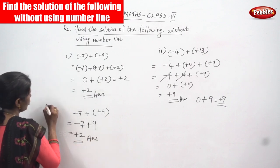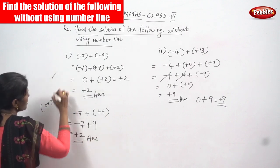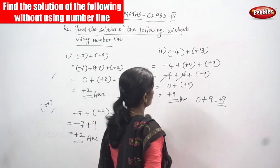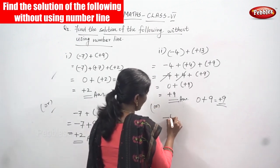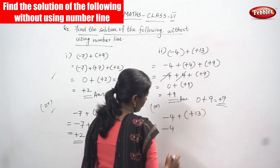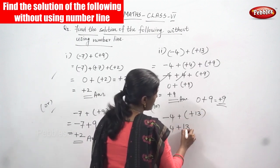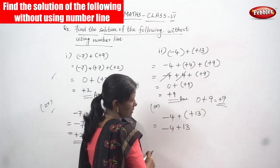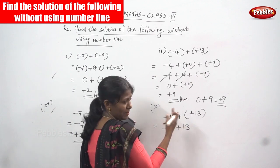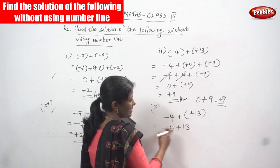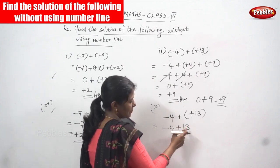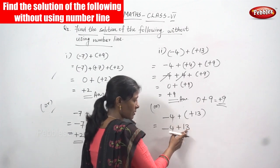So this is another method — you can choose whichever is convenient for you. For the next sum: minus four, write it as it is, then plus into plus gives plus thirteen. You are going to subtract. Why? Because this is a negative number and this is a positive number — actually you have to add, but you can't add because the signs are different, so you subtract from the bigger number. Thirteen is the bigger number, so from thirteen you subtract four.